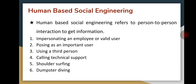The third method is using a third person, where an attacker pretends to have permission from an authorized source to use a system. This trick is useful when the authorized person is on leave or outside the country. The fourth technique is calling technical support — help desk and technical personnel are trained to help users, so attackers pretend to be technical support executives and try to get information from users over a phone call.